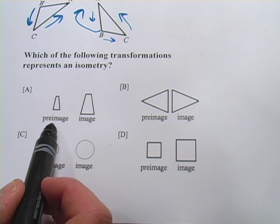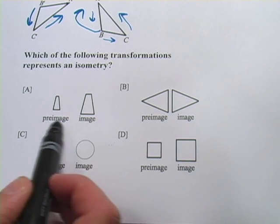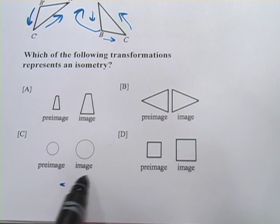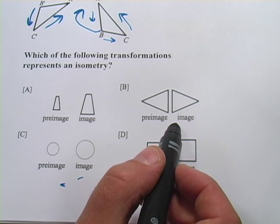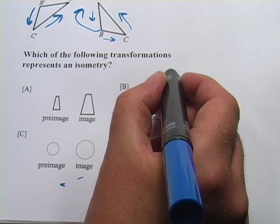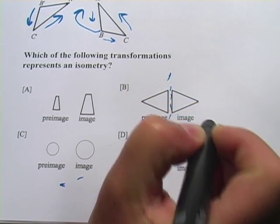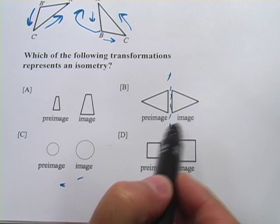Our pre-image and our image, so the before and the after, well, the size changed there. The size changes here. The size changes here. Only this one are the sizes the same. So we're going to call this one the isometry, and it looks like it was a reflection.